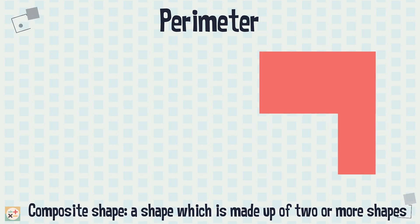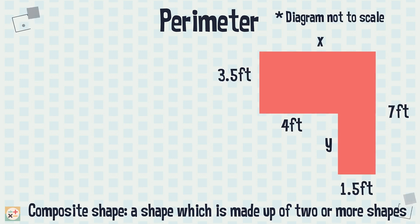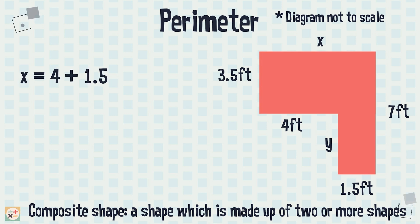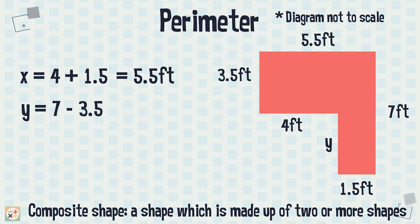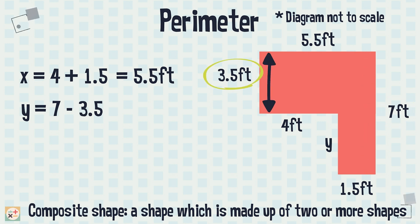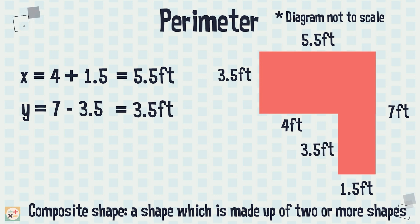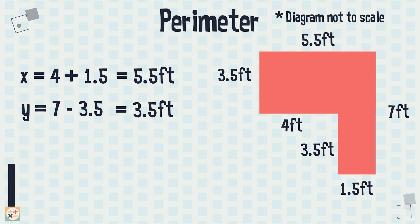Let's look at another example, this time with a composite shape. Some of the lengths of the sides are missing, so we need to work them out first. Let's label the unknown sides X and Y. We can now add all the lengths together to find the perimeter.